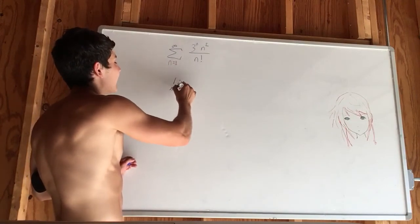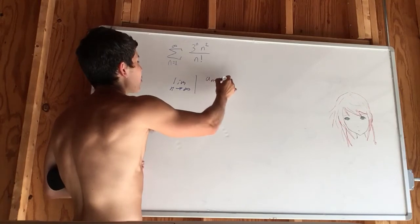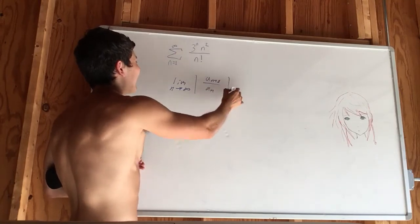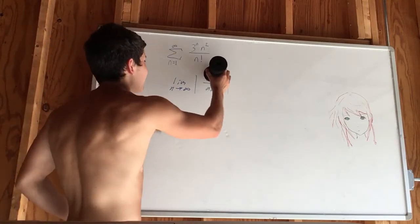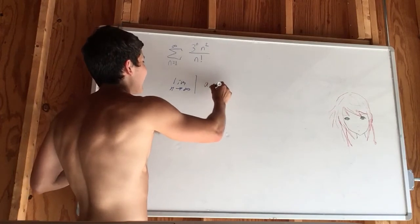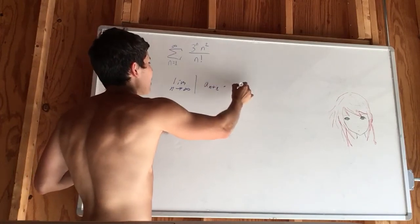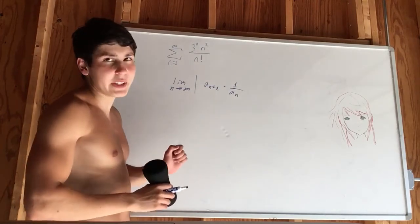The ratio test: we take the limit as n approaches infinity of the absolute value of a sub n plus 1 over a sub n. So our a sub n plus 1 is multiplied by the reciprocal of a sub n. It's the same thing as a sub n plus 1 times 1 over a sub n—the reciprocal, in other words.